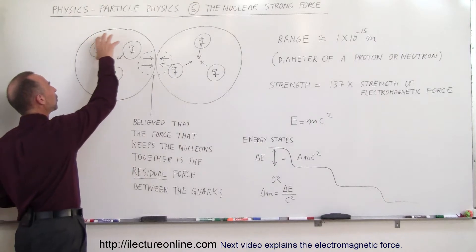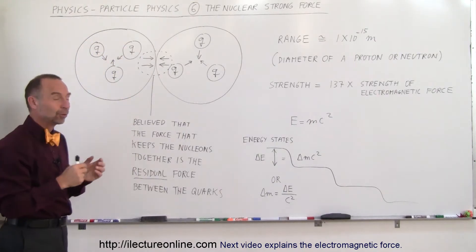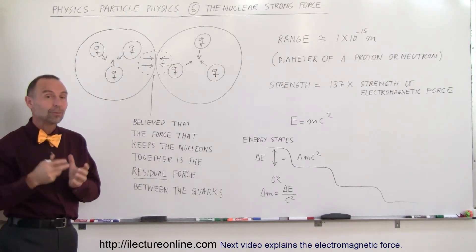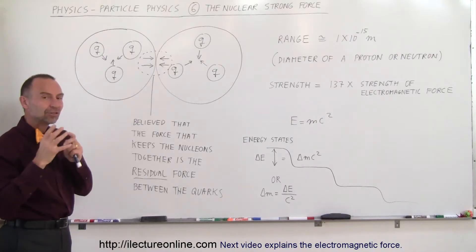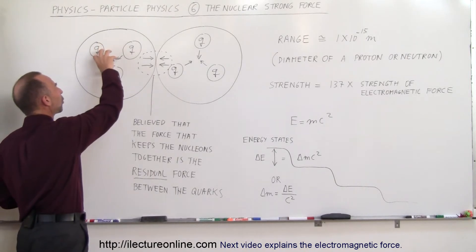So again, three quarks make up a proton, or three quarks make up a neutron, or there's a different combination of the quarks to make the various nuclear particles such as neutrons and protons. And what we discovered was the nuclear strong force is responsible for keeping the quarks together.